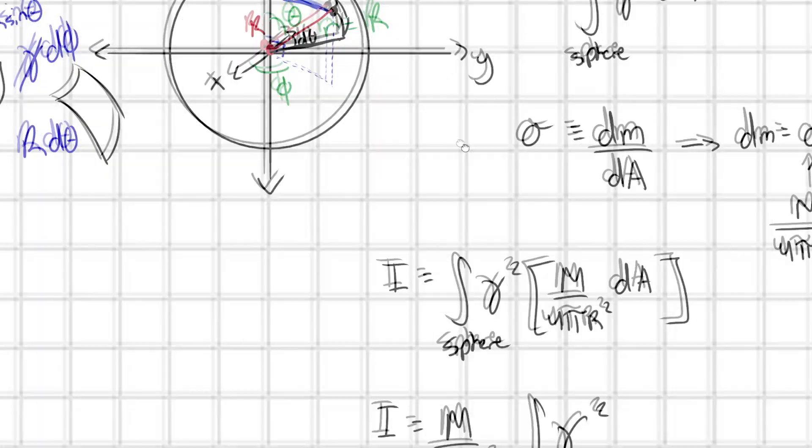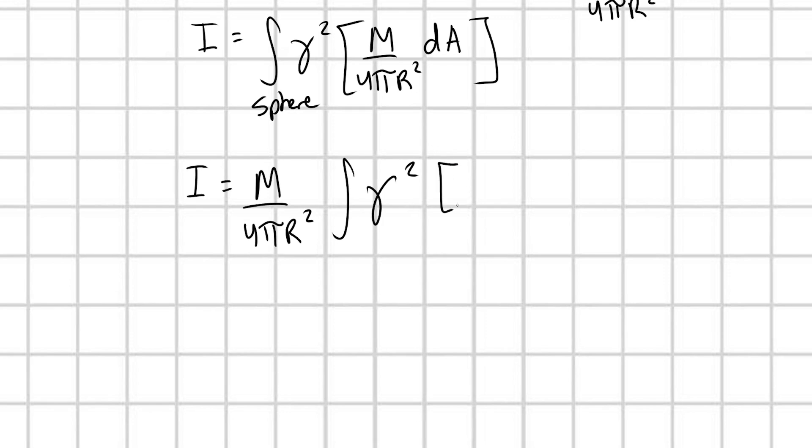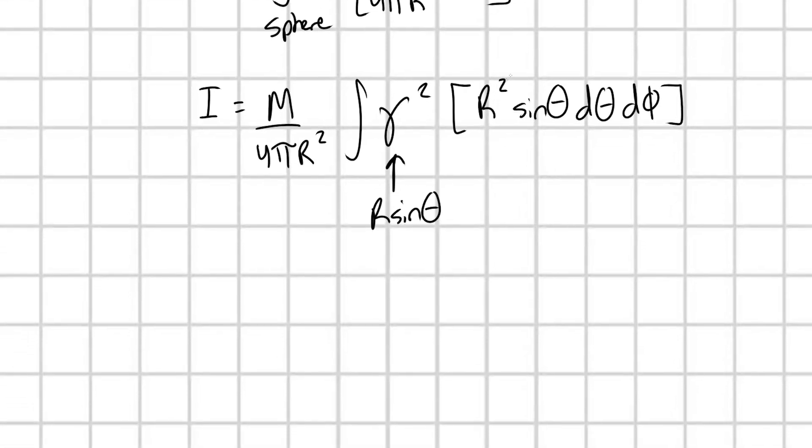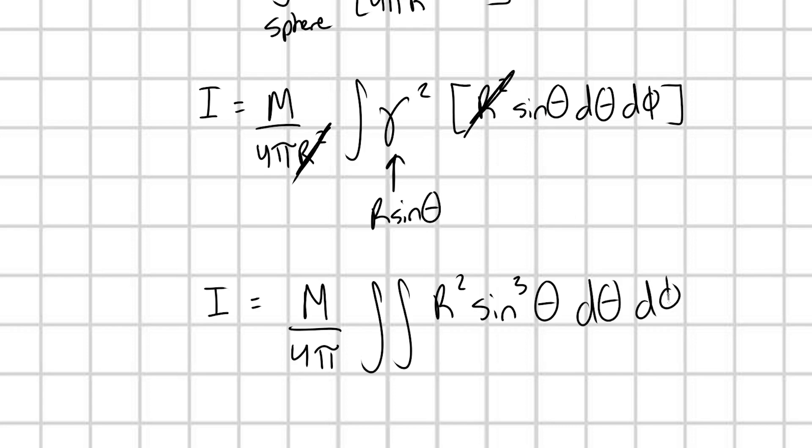Okay, so let me start just by plugging in for dA. We said this was r squared sine theta d theta d phi, that's what we found. And this gamma here, we also found that this was r sine theta. So let's rewrite this out. And oh my goodness, look how nice this is. These r's here are going to cancel right there. So let me rewrite out. I is equal to, and now we have d theta, d phi. We're going to need a double integral. So we have M over 4 pi double integral r squared sine cubed theta. See, we have this sine theta squared, then times another sine theta. Perfect. d theta d phi.